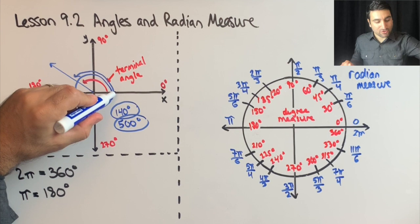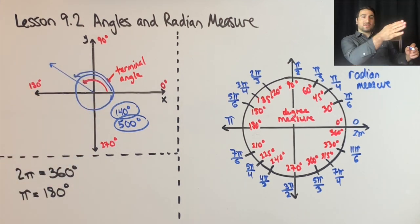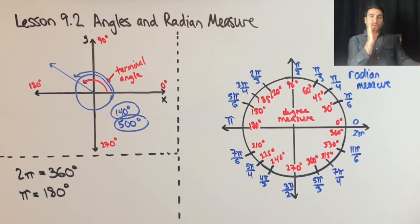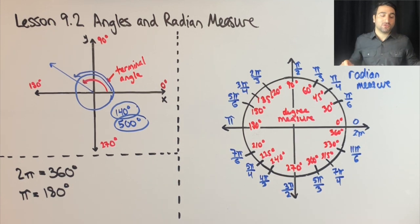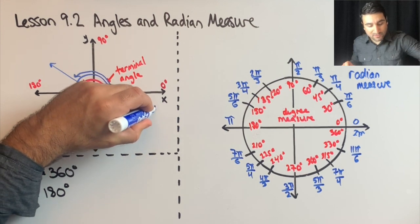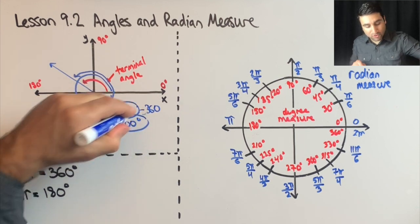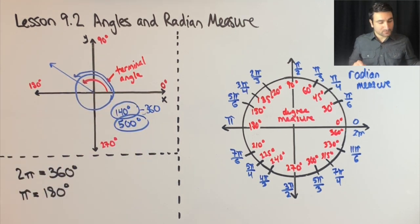So 500 degrees, doesn't matter how many times you turn around, you're still facing that same direction. So 140, you're facing here. And 500, you're facing that same angle. So those are called coterminal to each other. And you can get a coterminal angle by adding 360 or subtracting 360 to any angle. So that's the discussion with terminal angles.